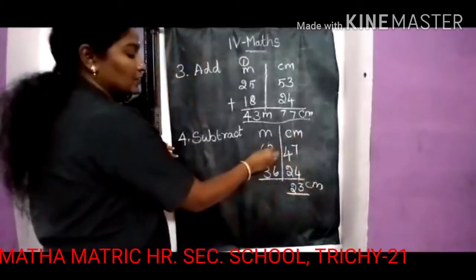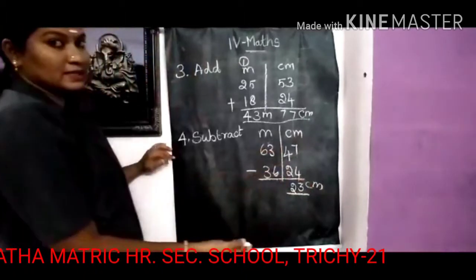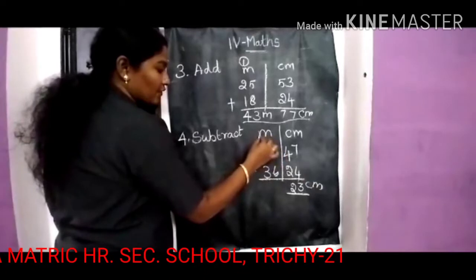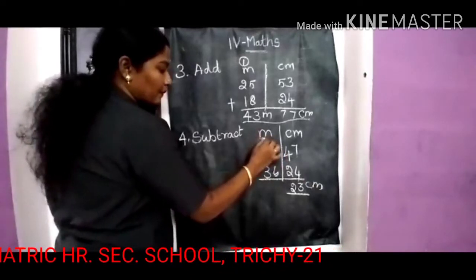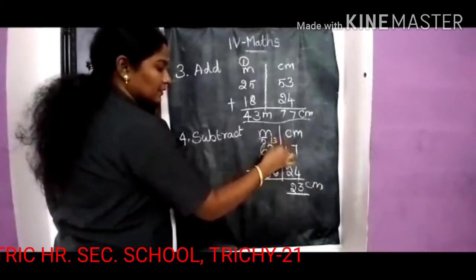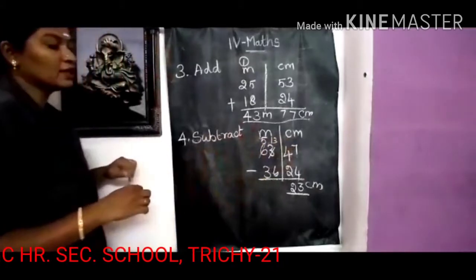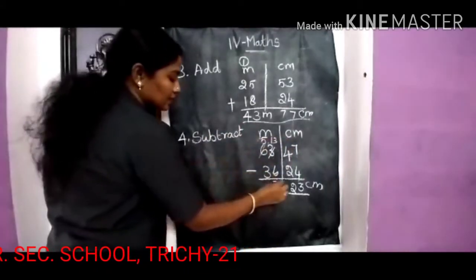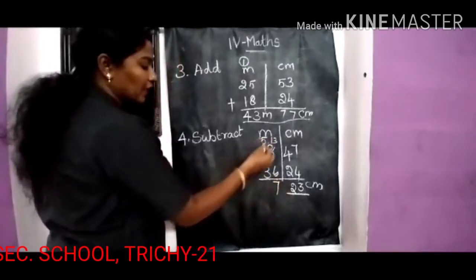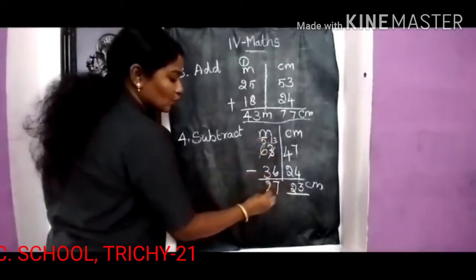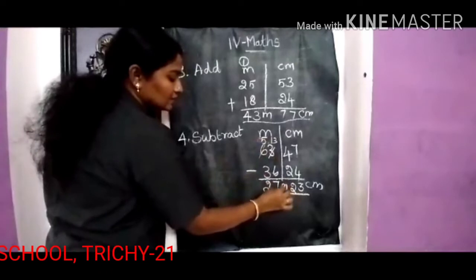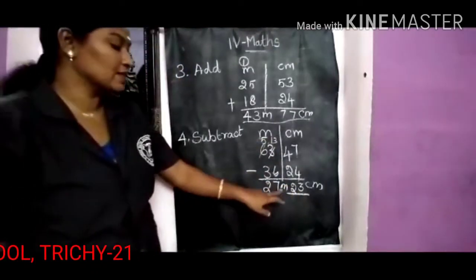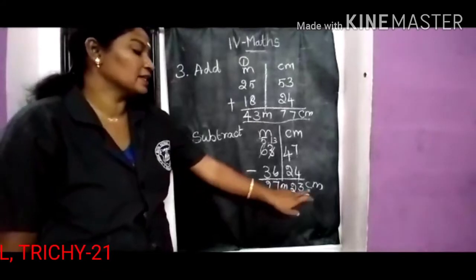Now the meter side: 3 minus 6 is not possible, so you borrow 1, changing it to 13. Then 13 minus 6 is 7. And 5 minus 3 is 2, so 27 meter. The final answer is 27 meter 23 centimeter.